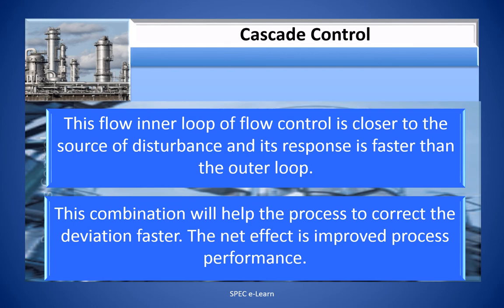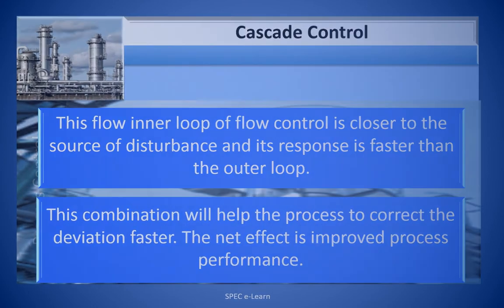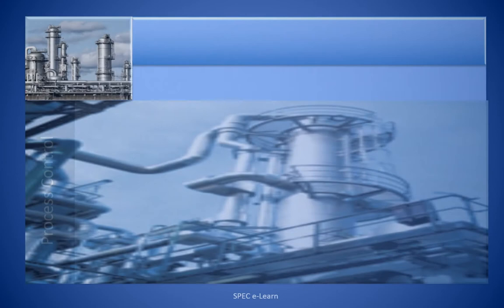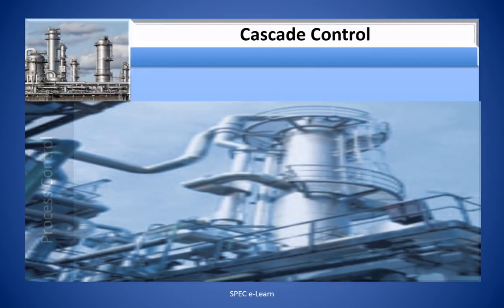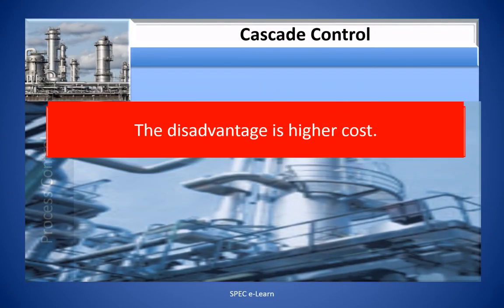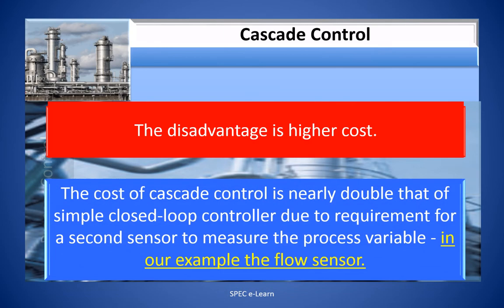This combination helps the process to correct deviation faster. The net effect is improved process performance. The disadvantage is higher cost. The cost of cascade control is nearly double that of a simple closed loop controller due to the requirement for a second sensor to measure the process variable — in our example, the flow sensor.